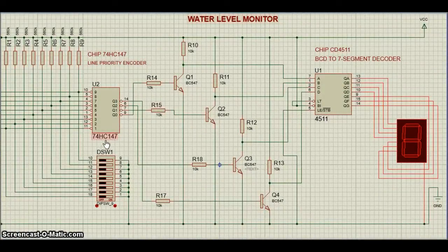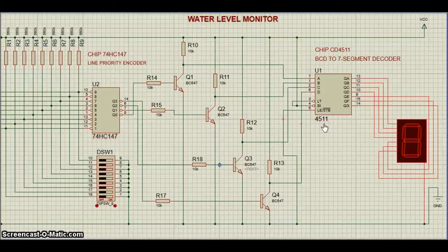I'm using 74HC147 and 4511 chips. The Numeric Water Indicator circuit works on 5 volt regulated power supply. It is built around priority encoder IC 74HC147 U2, BCD to 7-segment decoder IC CD4511 U1, 7-segment display LTS543, and a few discrete components.